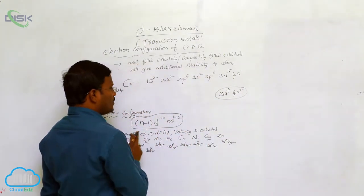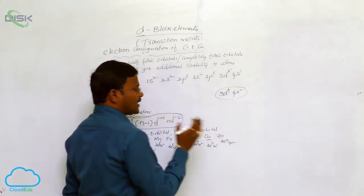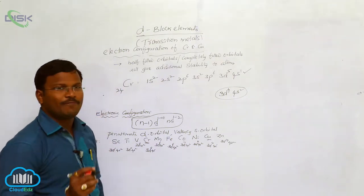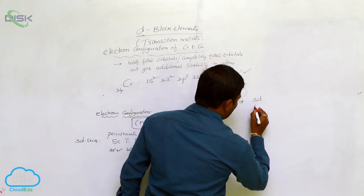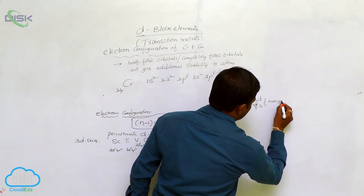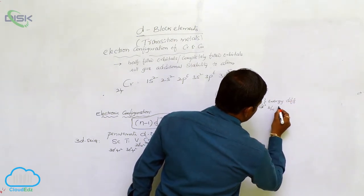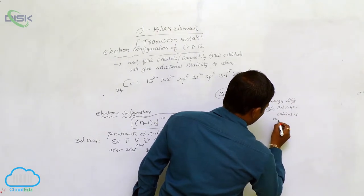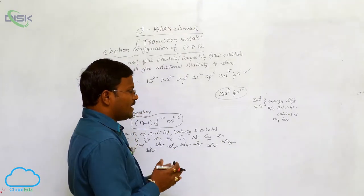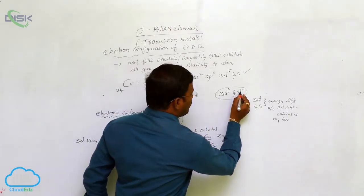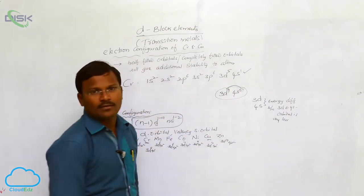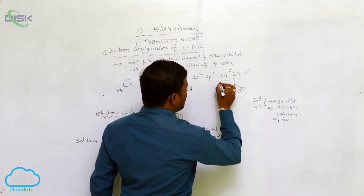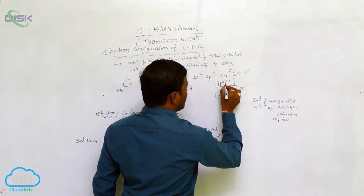As per the general phenomena, chromium should have 3d4, 4s2 electron configuration. But the identified actual electron configuration exhibited by chromium is 3d5, 4s1. This is because the energy difference between 3d orbital and 4s orbital is very less. Due to this less energy gap, one electron from 4s orbital jumps to 3d orbital, resulting in 3d5, 4s1 configuration where the d orbital is half filled with 5 electrons.